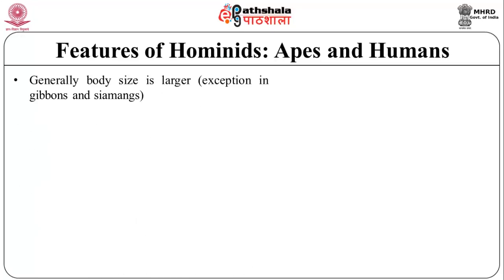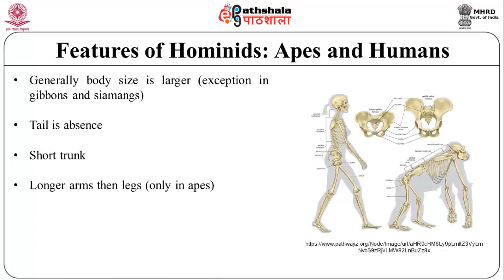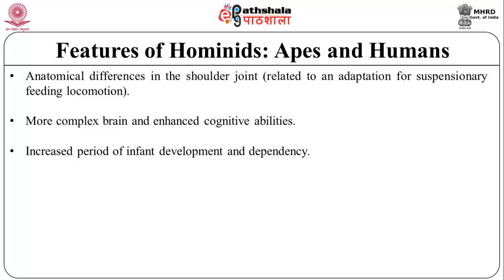Further features of anthropoids include more generalized dentition, absence of the dental comb and some other features, differences in female internal reproductive anatomy, longer gestation and maturation periods, increased parental care, and more mutual grooming. Features of hominids — apes and humans: generally larger body size, with exceptions in gibbons and siamangs, tail is absent, short trunk, longer arms than legs in apes, more complex behavior, anatomical differences in the shoulder joint related to suspensory locomotion, more complex brain, enhanced cognitive abilities, and increased period of infant development and dependency.